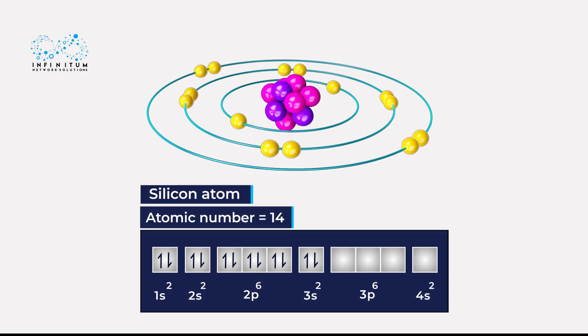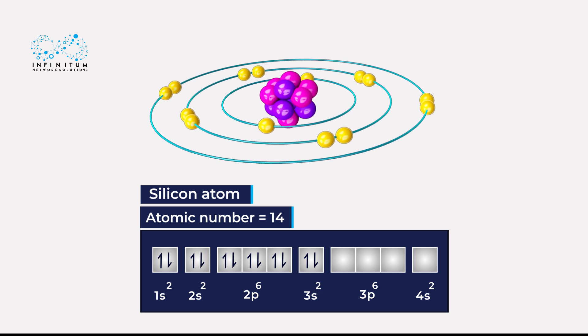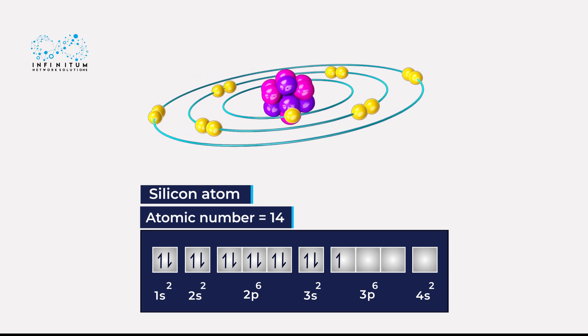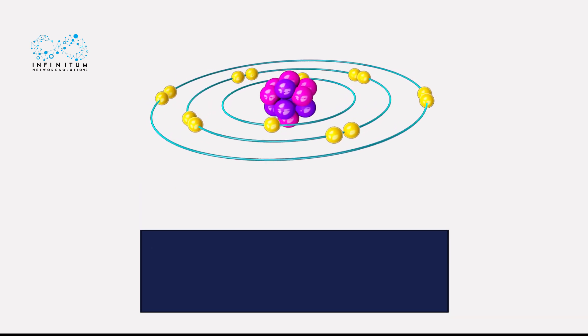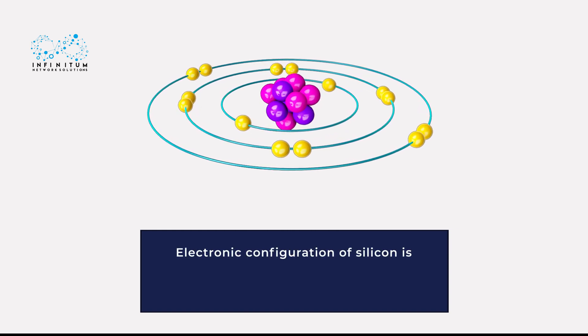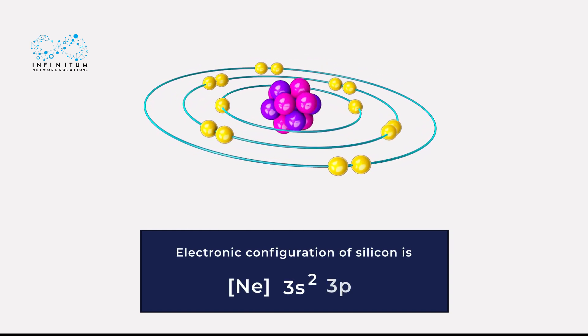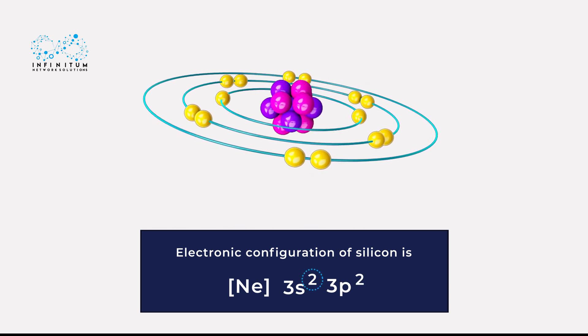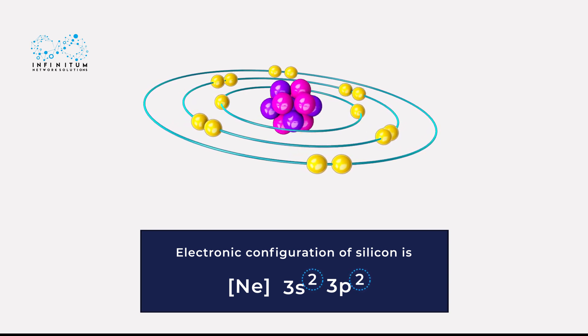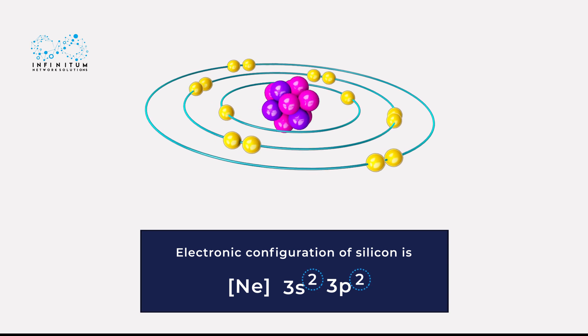Therefore, the 13th and 14th electrons occupy the 3p orbital first. This means that the electronic configuration of silicon is Ne 3s² 3p². The superscript represents the number of electrons present in the corresponding orbital.